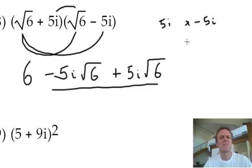Well, that's going to give me negative 25i squared. Now, that's going to turn into a positive 25. Of course, remember the i squared is negative 1. So negative 25, negative 1, positive 25.